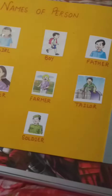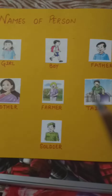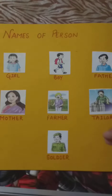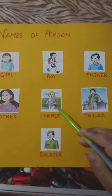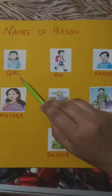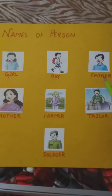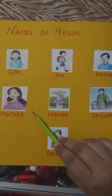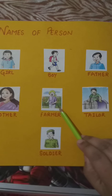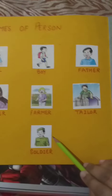I am going to show you some more examples of nouns. Name of a person — kisii bhi person ke name ko hum noun bolte hai. Jaisi girl, boy, father, mother, farmer, tailor, soldier.